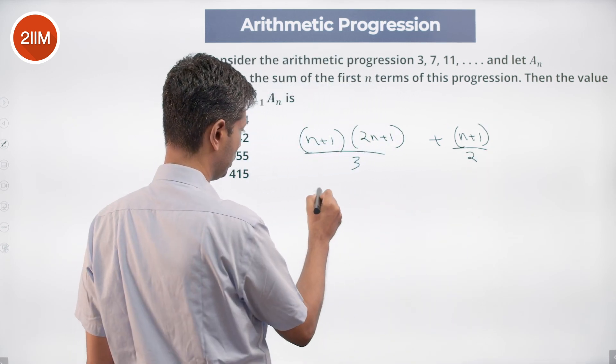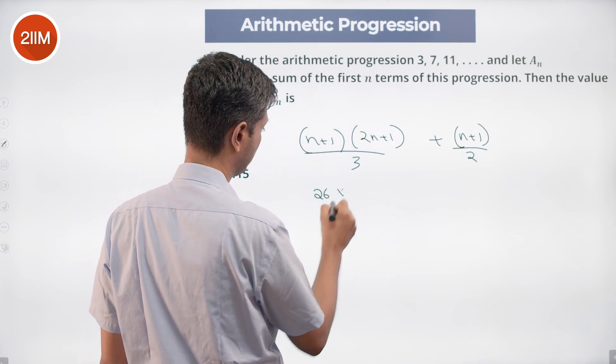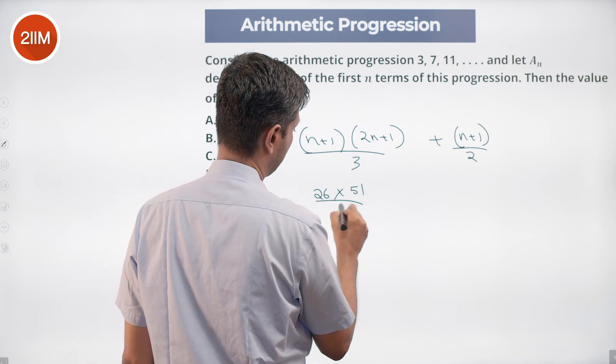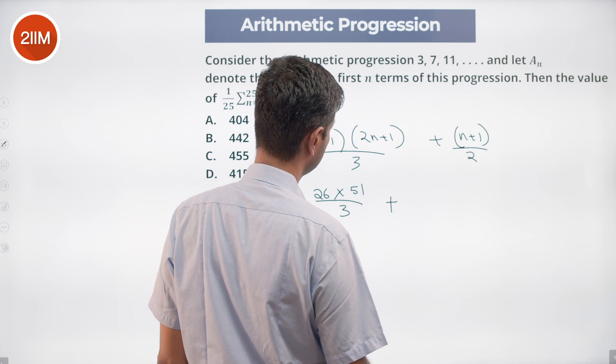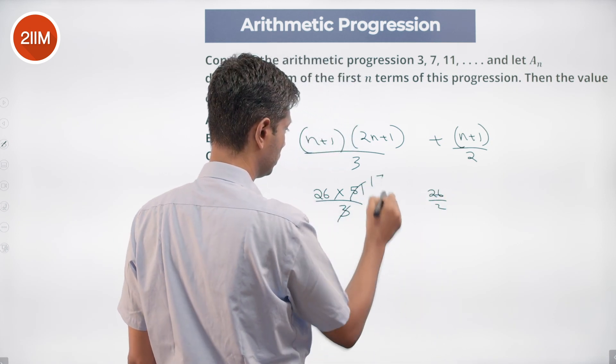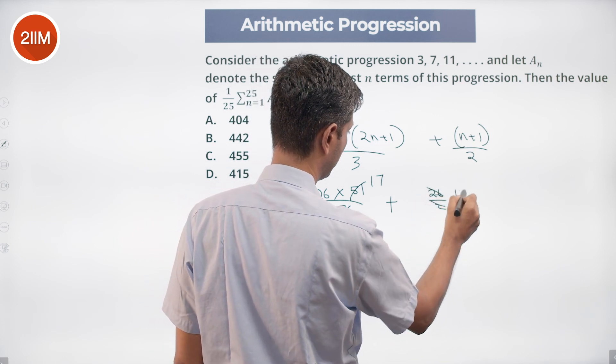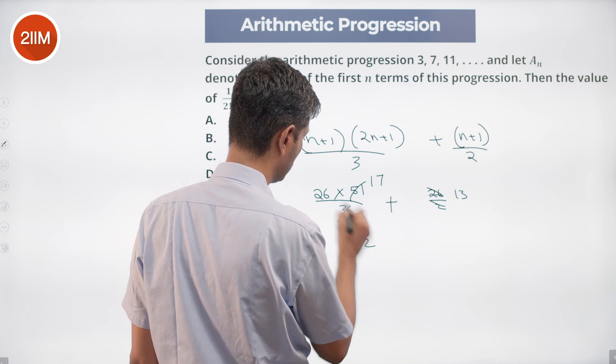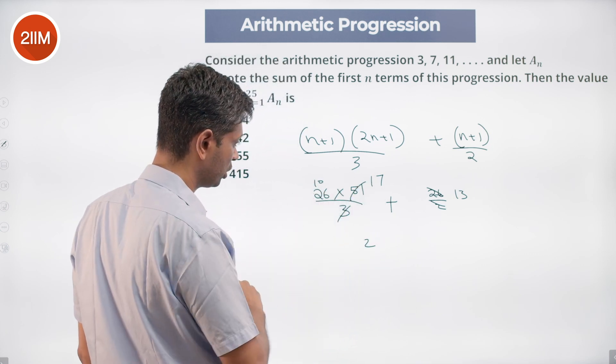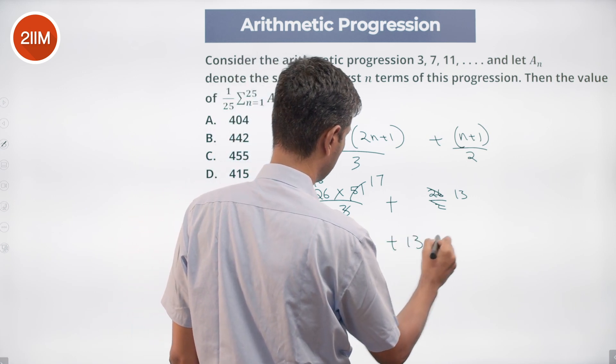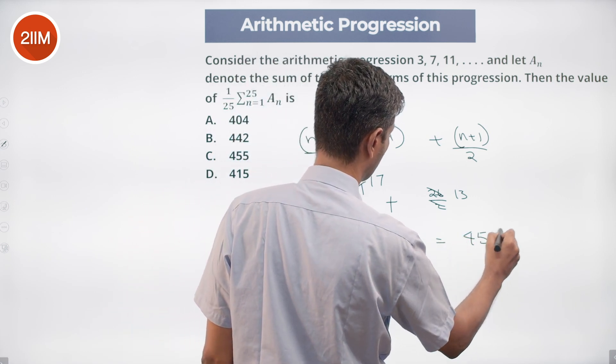n is 25. 26 into 51 by 3 plus (n+1) by 2. n is 25. 26 into 17. 17 times 6 is 102. 17 into 2 is 34 plus 10, which is 44. 442 plus 13 which is 455.